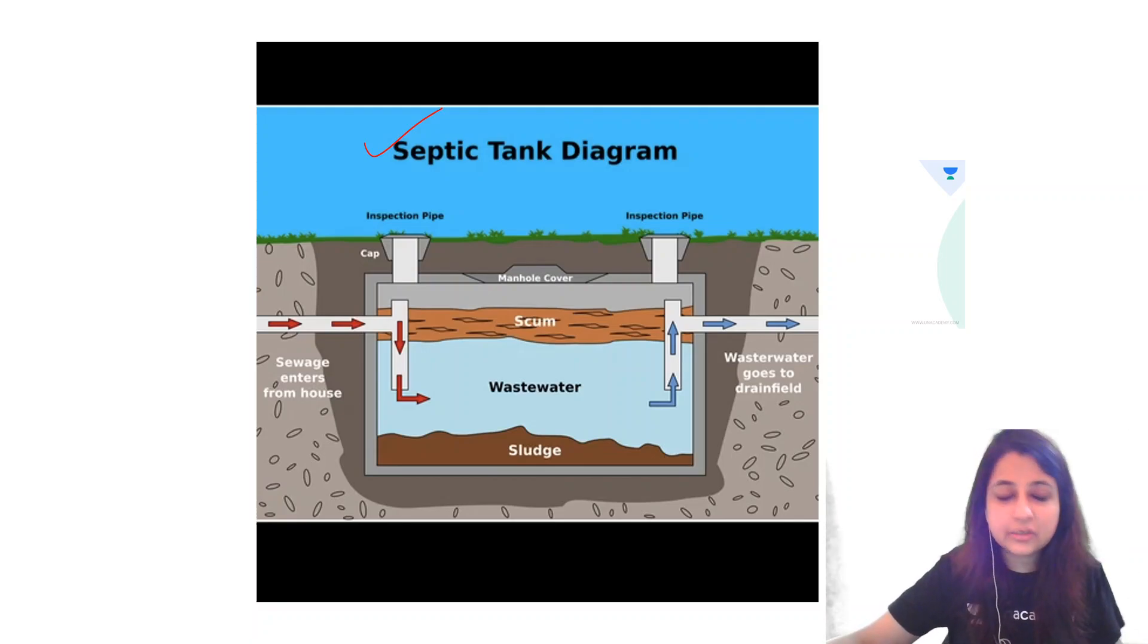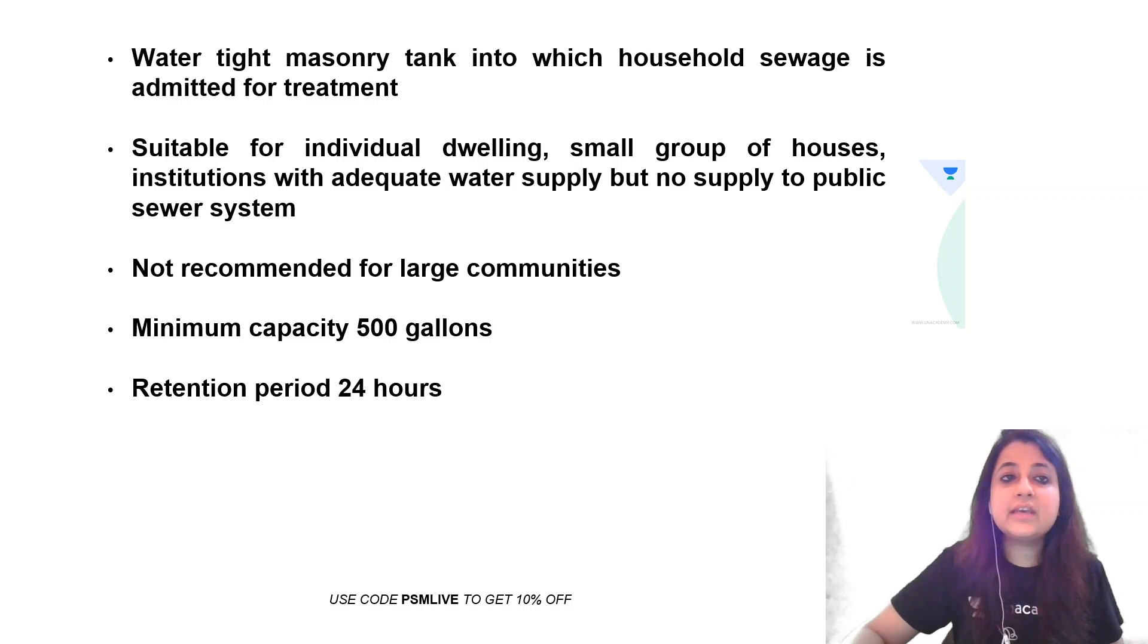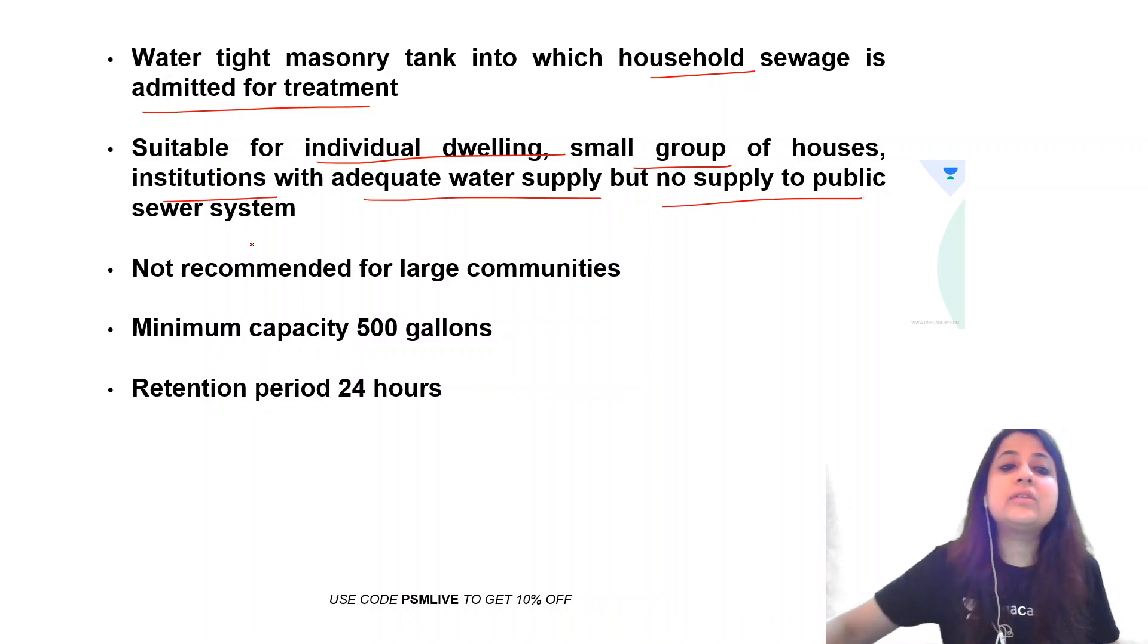Now, where is septic tank used? Basically, this is used for household treatment of sewage. Where water supply is adequate, but we do not have connection to adequate sewerage systems, we use a septic tank. Now, over here, you can see it's a watertight masonry tank into which household sewage is admitted for treatment, suitable for individual dwellings, small group of houses, institutions with adequate water supply, but no supply to public sewer system.